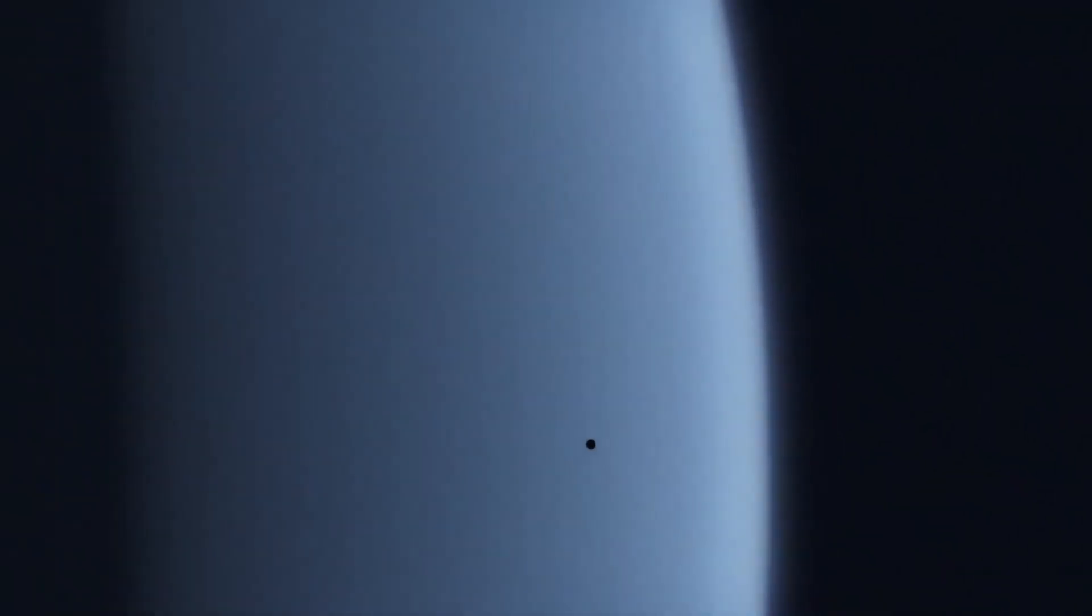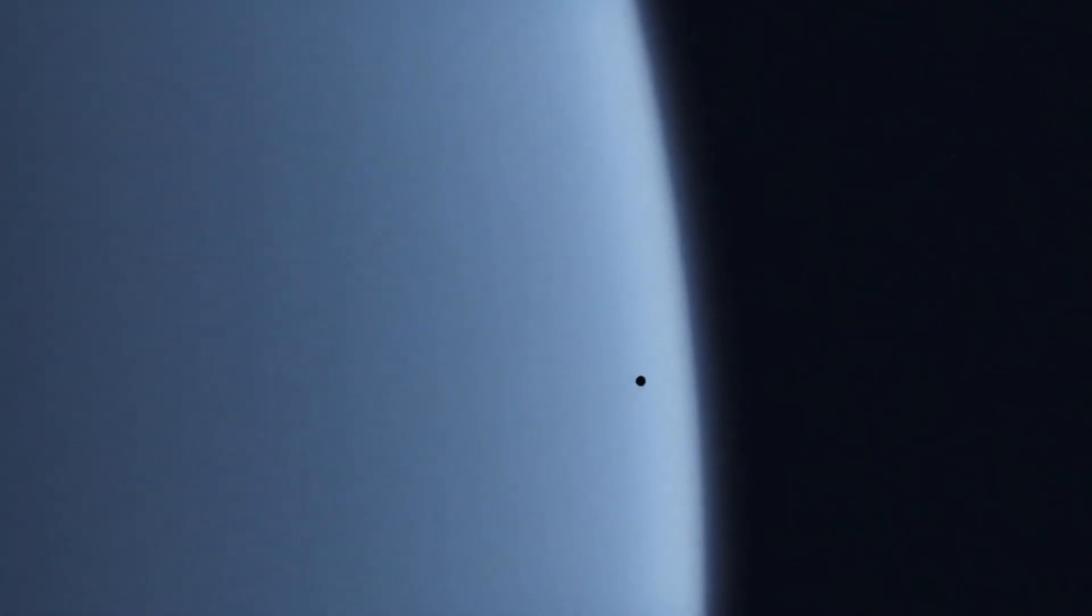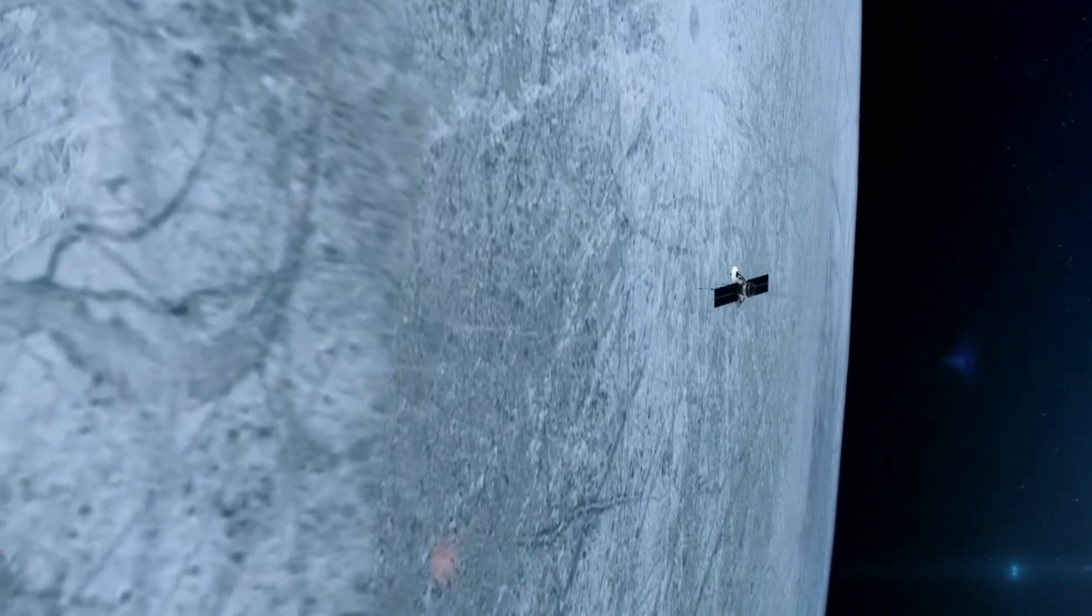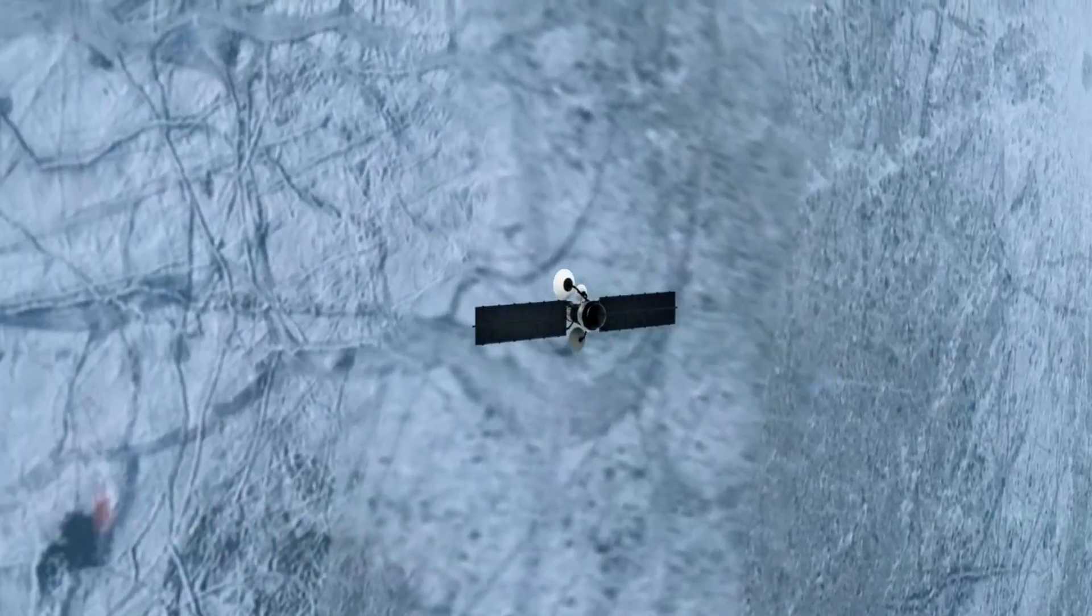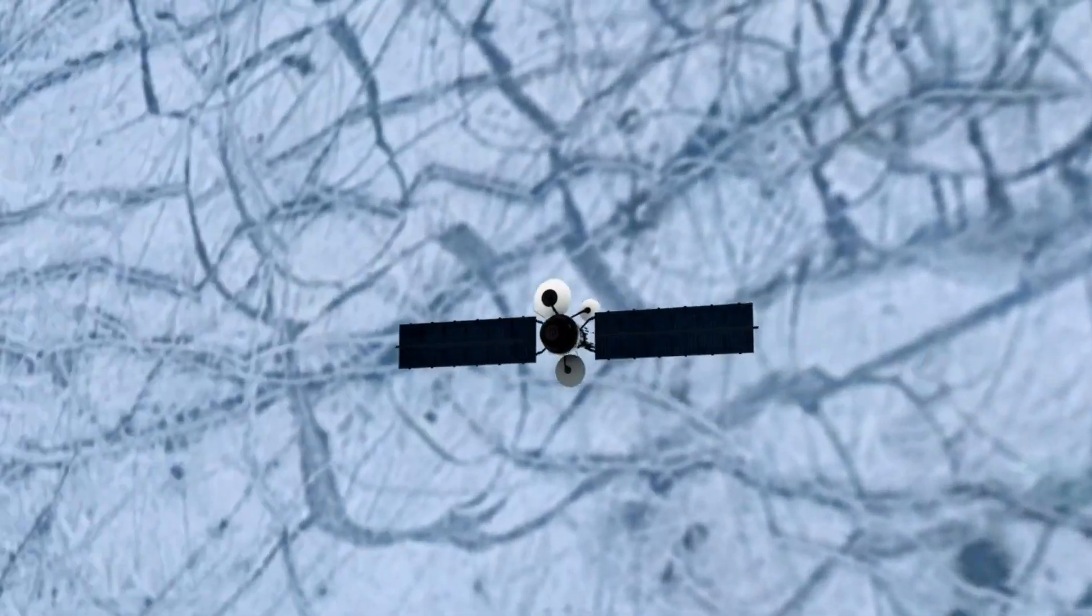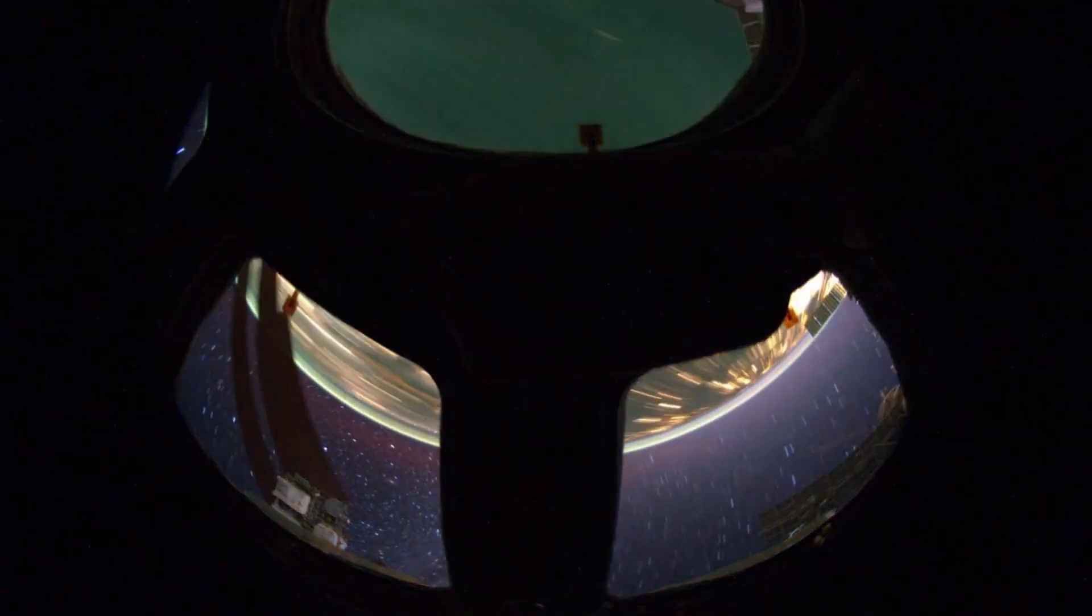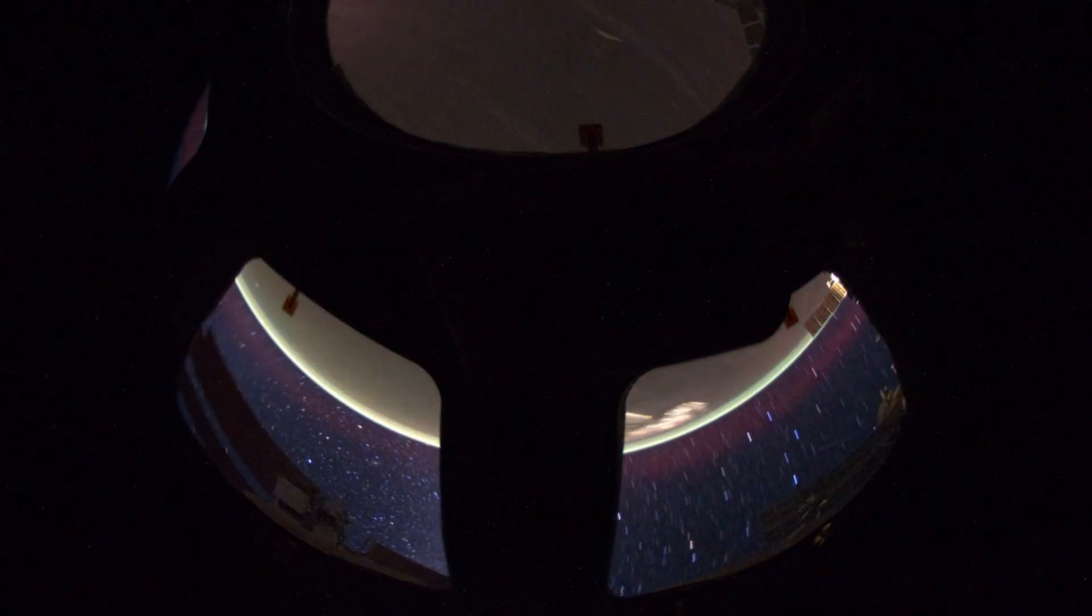Beyond our solar system lies the Oort cloud, a vast distant shell of icy objects loosely bound by the Sun's gravity, extending toward the nearest stars. The Voyagers have not yet reached it, but they crossed into true interstellar space when they passed the heliopause, the outer boundary of the heliosphere, where the solar wind and magnetic field give way to the interstellar medium.